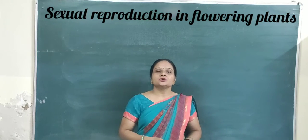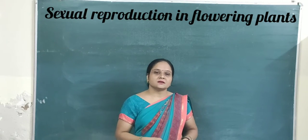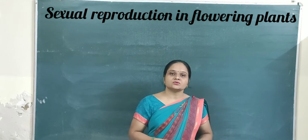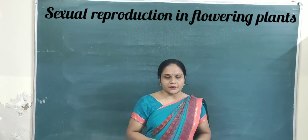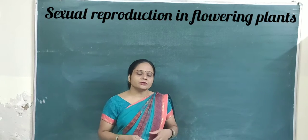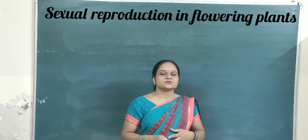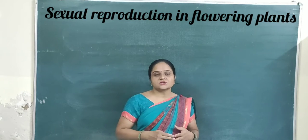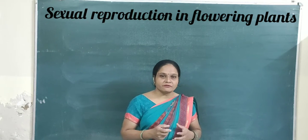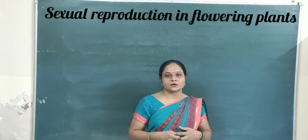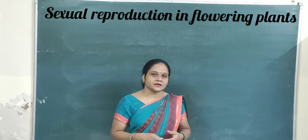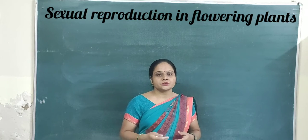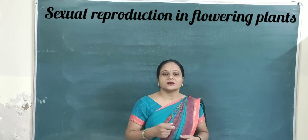In this video we will start a new chapter from class 10 plus 2 unit 1st, chapter 2nd, that is sexual reproduction in flowering plants. We will discuss about the pre-fertilization events, meaning the preparation of the gametes. First we are taking the male reproductive organ, that is the androecium or stamen. So let me start.